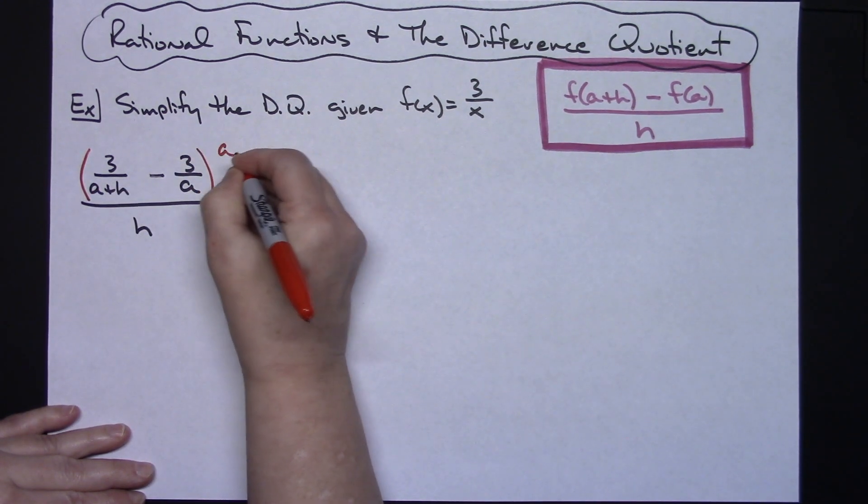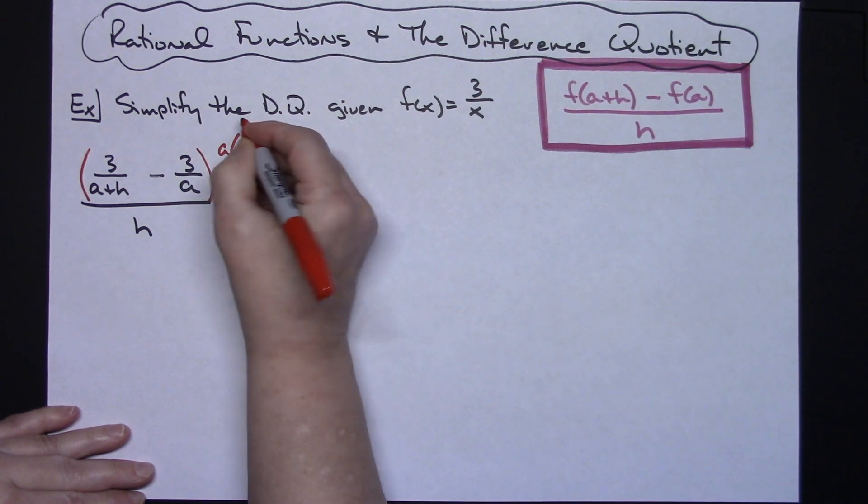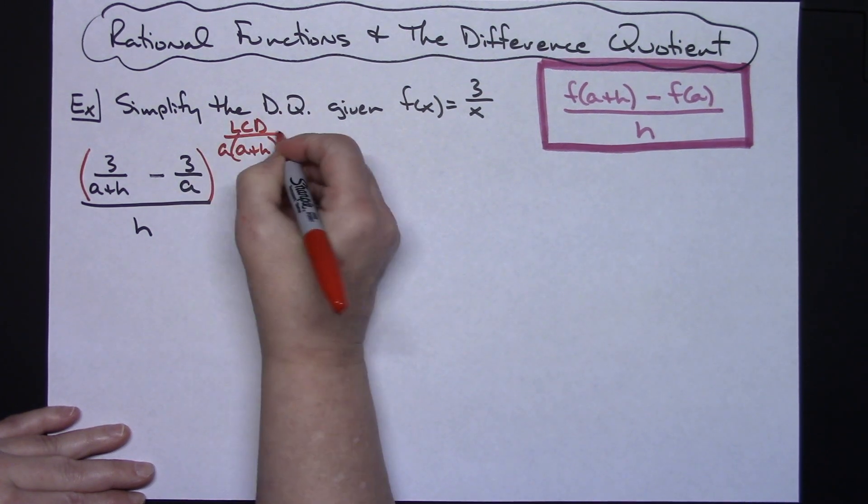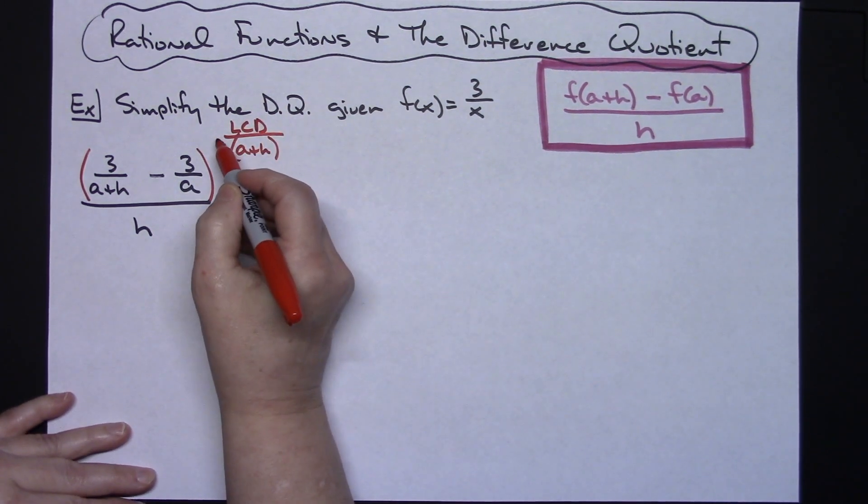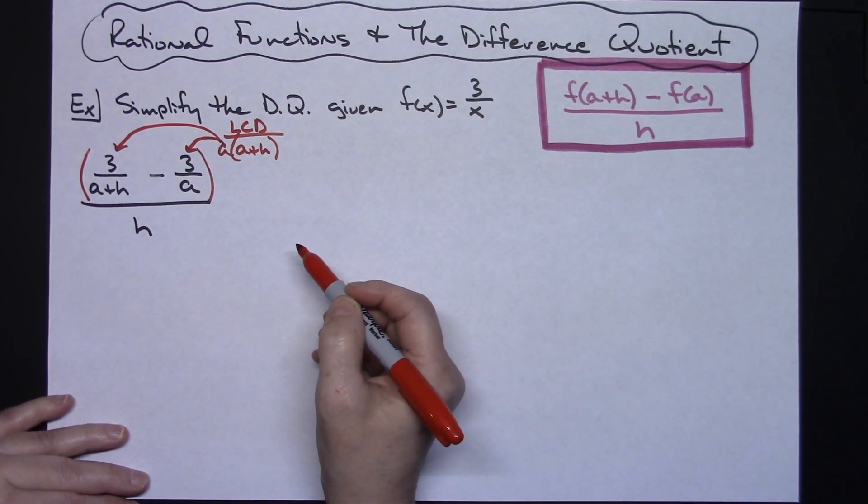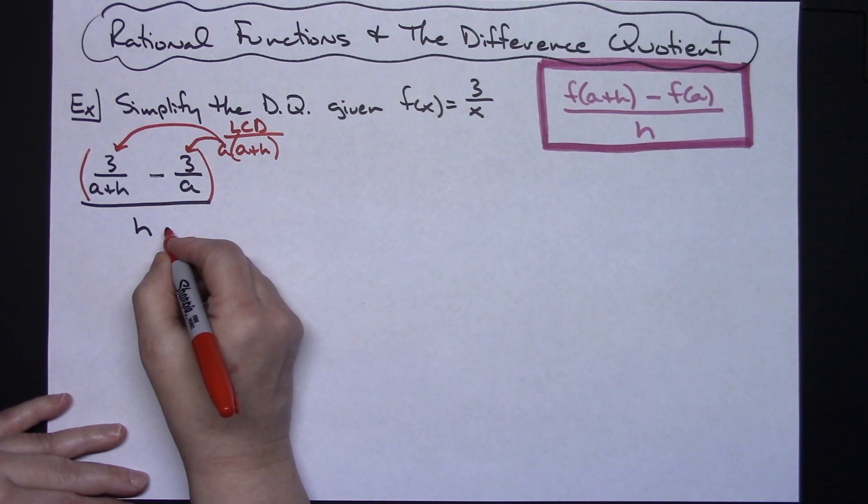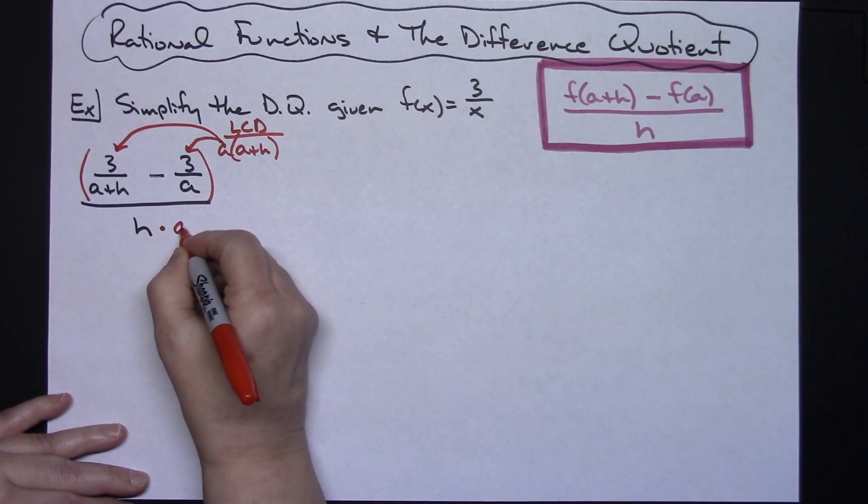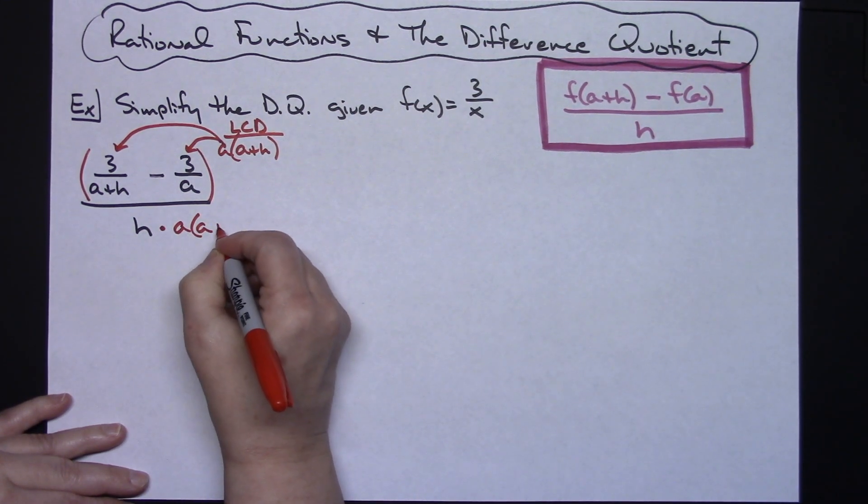So I'm going to choose to multiply through by a times a plus h, and that is the least common denominator. When I multiply through by that, I'm going to multiply both terms in the numerator and then I also need to multiply the bottom by that least common denominator as well.